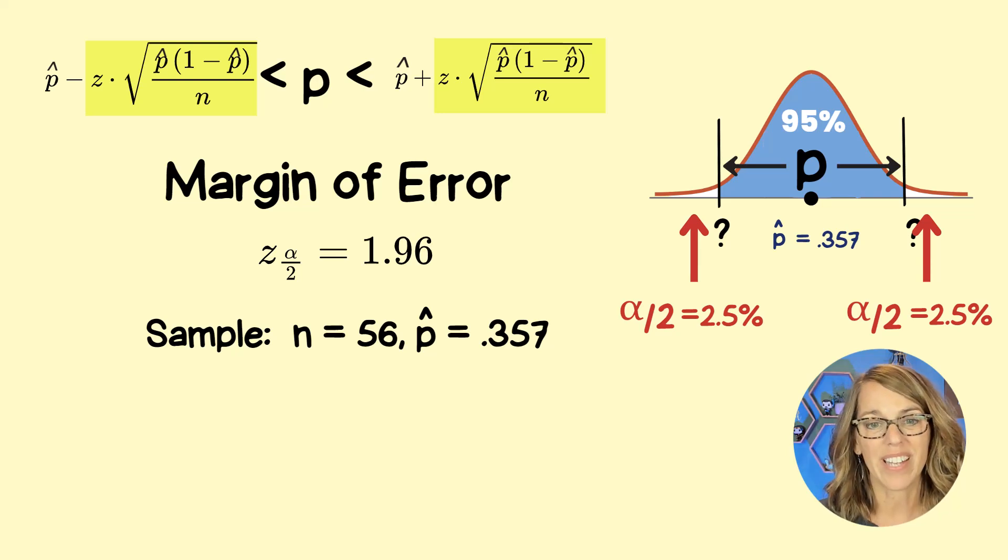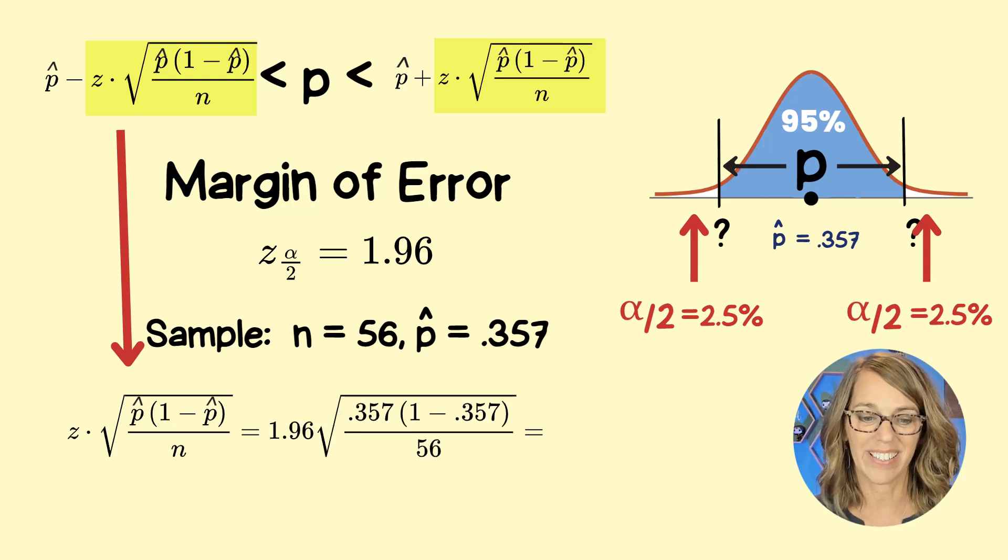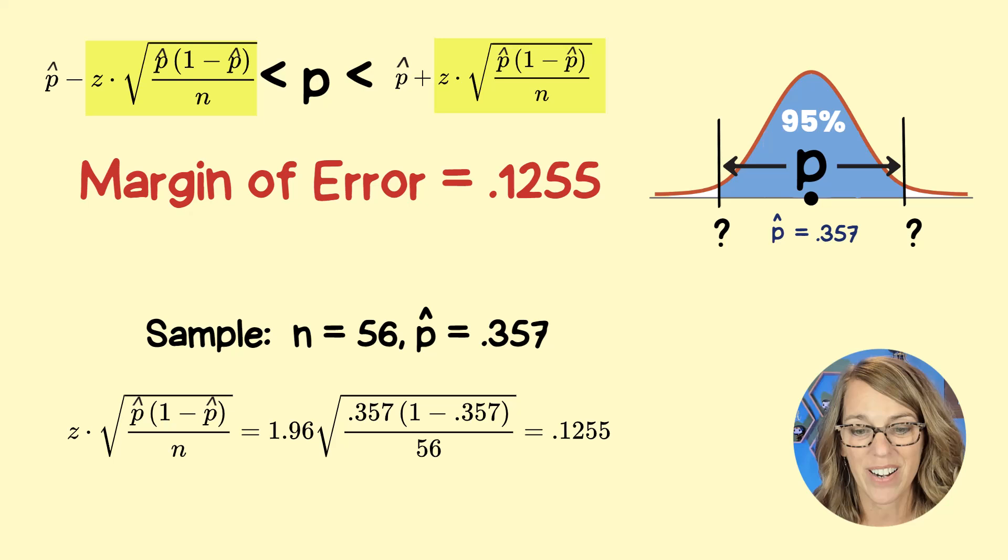And I'm going to bring that formula down, the highlighted formula down, so we can plug in all of our values. So the Z, the P hat, and the N give me this. I just put all of that into my calculator. And I ended up with a margin of error of 0.1255.